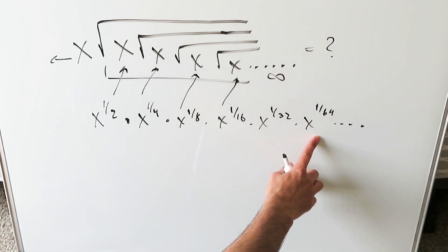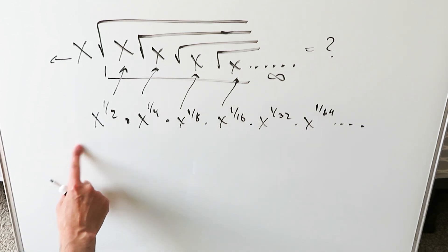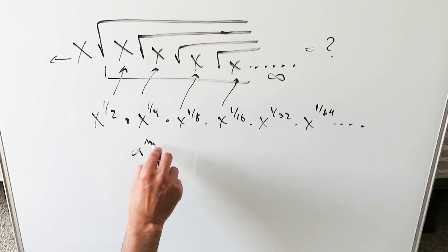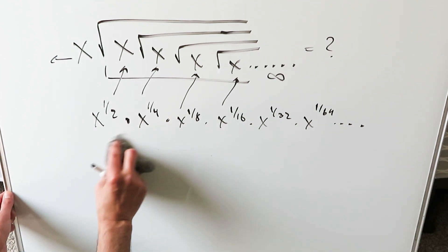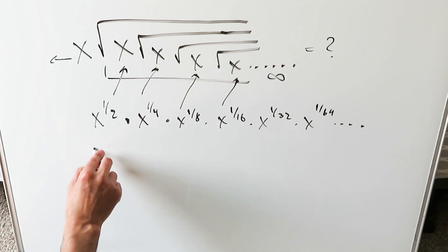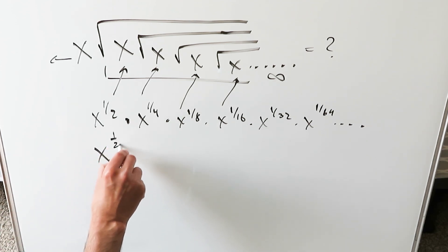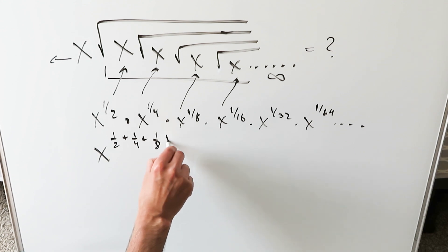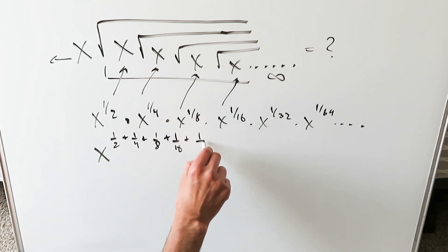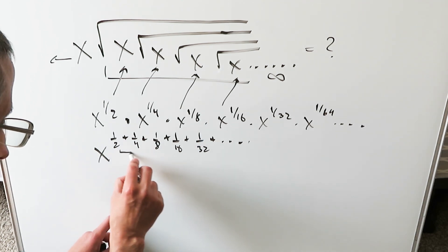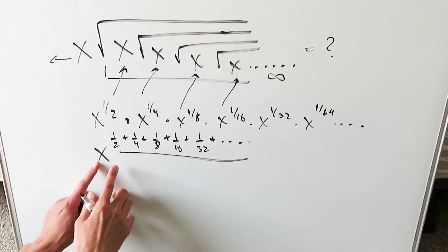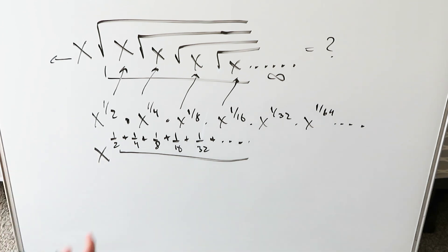Look over here — these are all exponential factors, each having the same base but different exponents. When the base is the same, the exponents add: a to the m times a to the n, with the same base, gives exponent m plus n. So I am really looking at a common base x to the power of 1 over 2 plus 1 over 4 plus 1 over 8 plus 1 over 16 plus 1 over 32, on and on. I want to determine the sum of all of this, because that will give me the value of the exponent applying to x. I have not forgotten about the x sitting outside.